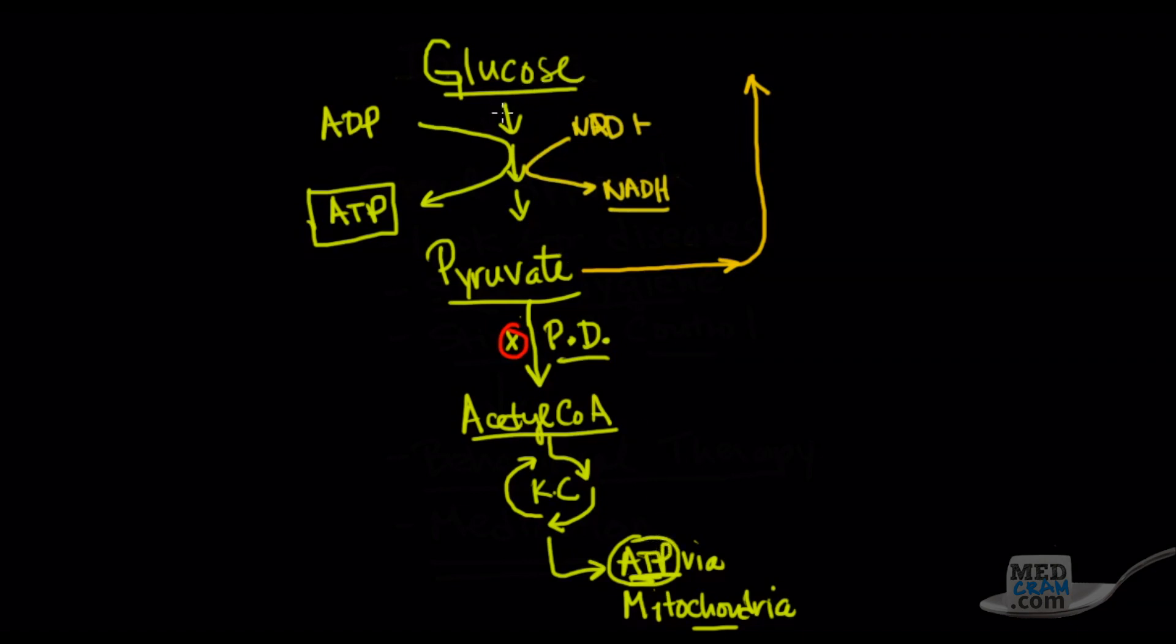Here's the problem. If you have glucose going to pyruvate, and this is the only thing that's occurring, eventually you could use up all of your NAD+. So what the body does is if you're unable to replenish your NAD+ here in the electron transport chain, pyruvate will then be converted and shuttled over to a different pathway.